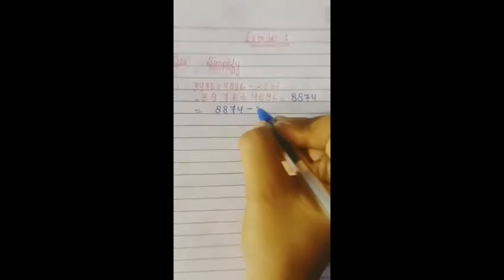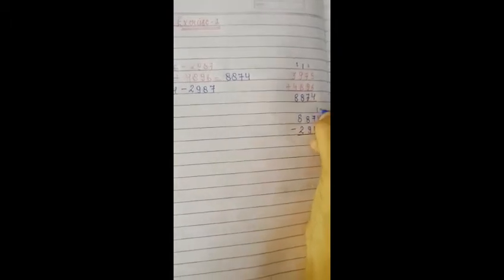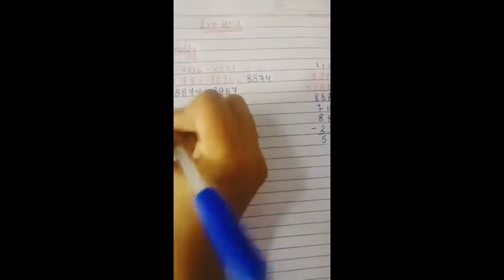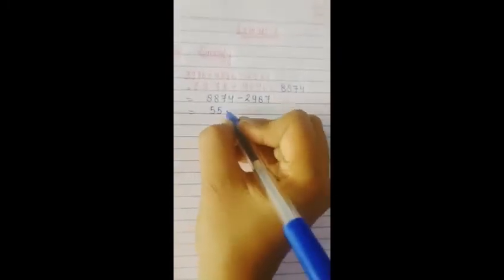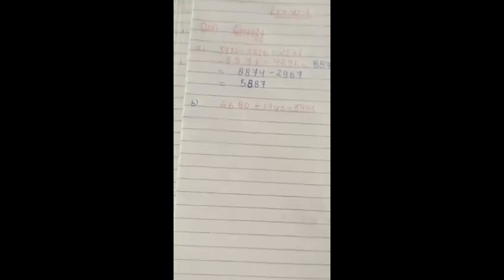8874 minus 2987. 4 minus — borrow — 14 minus 7 is 7; 16 minus 8 is 8; 17 minus 9 is 8; 7 minus 2 is 5. So the answer is 5887.